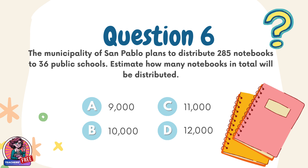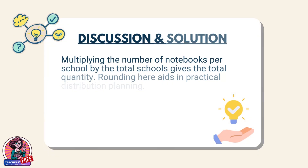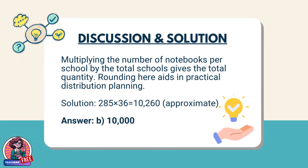Question 6. The Municipality of San Pablo plans to distribute 285 notebooks to 36 public schools. Estimate how many notebooks in total will be distributed. Choices: A. 9,000, B. 10,000, C. 11,000, D. 12,000. Discussion: Multiplying the number of notebooks per school by the total schools gives the total quantity. Rounding aids in practical distribution planning. Solution: 285 × 36 = 10,260. Approximate Answer: B. 10,000.